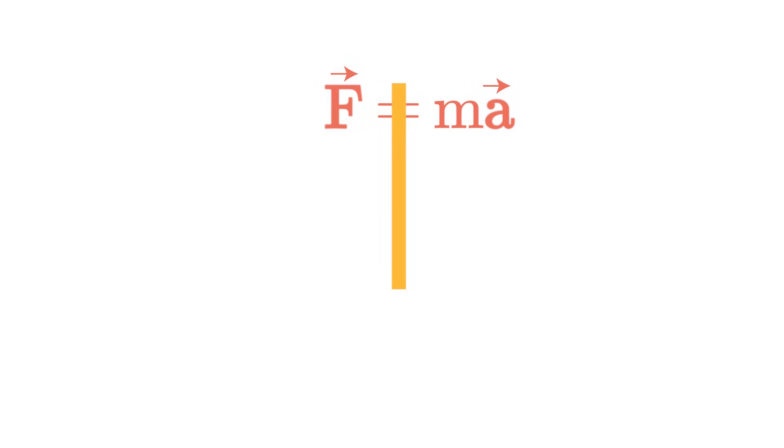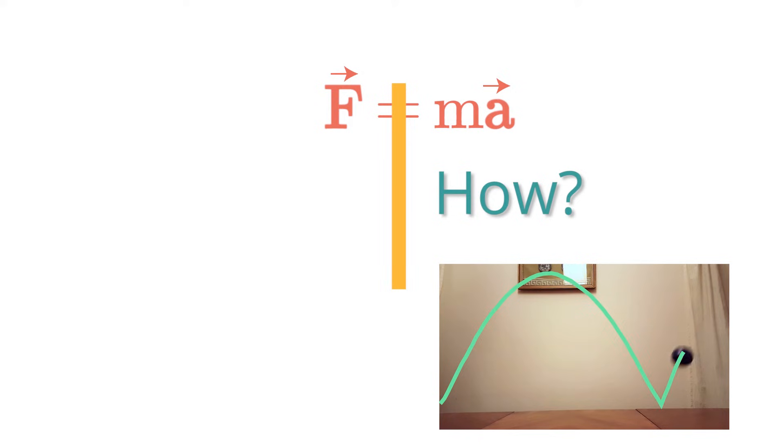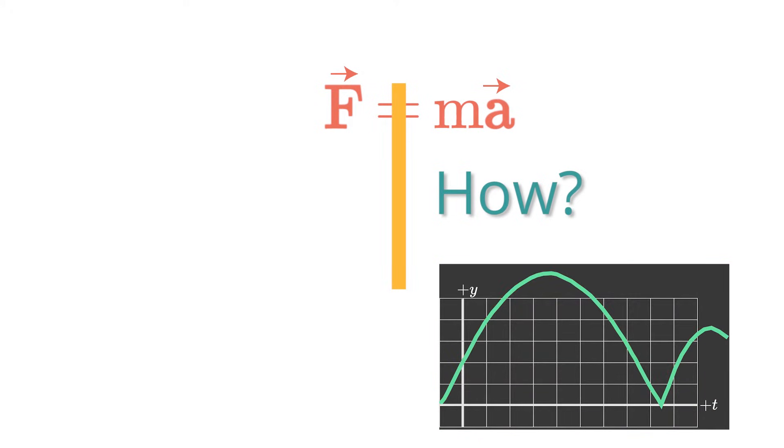The right-hand side, the ma side, is essentially asking the question of how. How does the object move? What does that motion look like? It's a description, a geometric description of the object's motion.